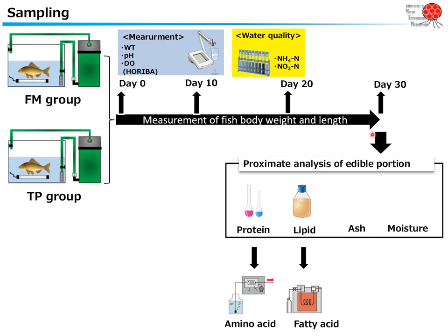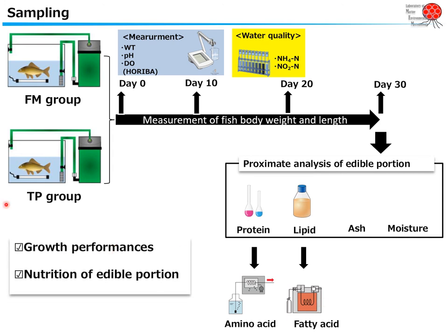During rearing, water quality was monitored periodically. After the one-month rearing experiment, we analyzed meat quality by proximate analysis — protein, lipid, moisture — and also measured amino acid composition using liquid chromatography and fatty acid composition using gas chromatography. We also checked the growth performance of the carp and evaluated the nutritional value of the edible portion — the carp meat.